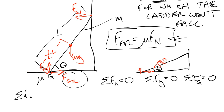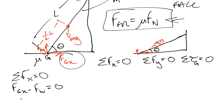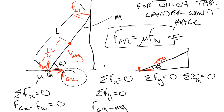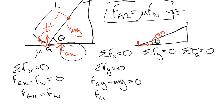So for the X's, summation of the forces in the X direction, I've got FGX minus FW equals zero. So I know now that FGX equals FW. Let's do summation of the forces in the Y direction. I know that FGY minus MG equals zero because those are the only two vertical forces. So FGY equals MG.